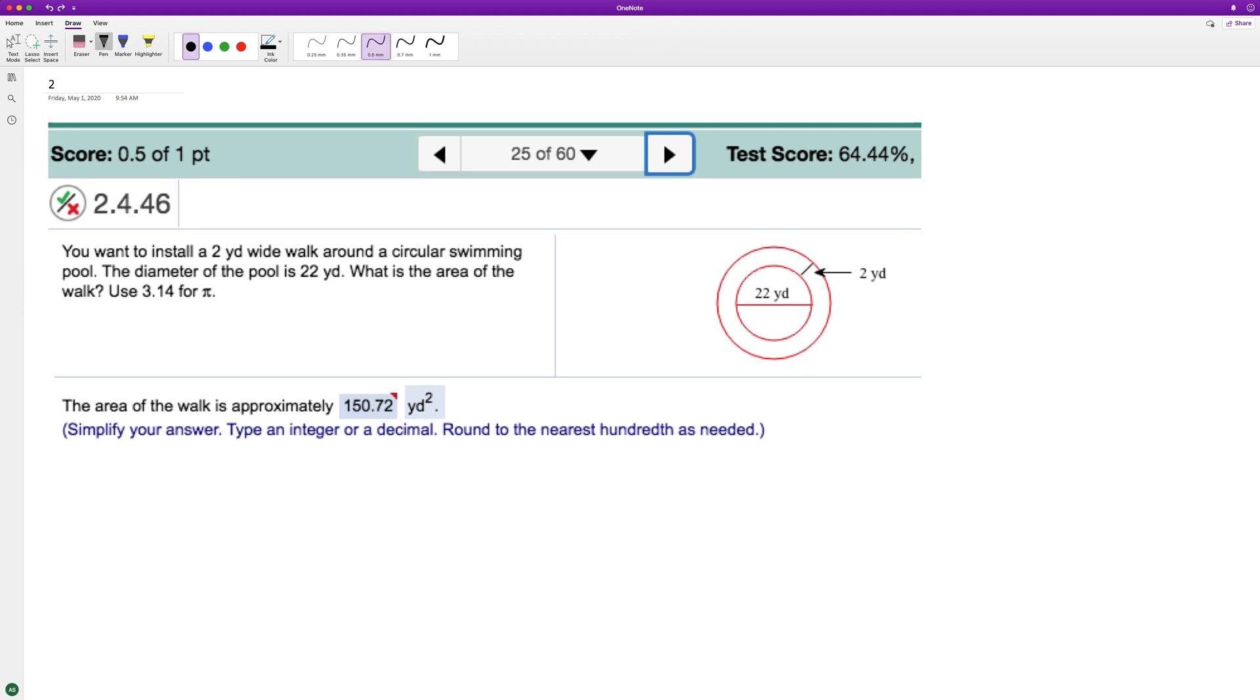To do that, the area of a circle is equal to πr², r being the radius. In this case the radius is 11 plus 2, so it's going to be equal to...